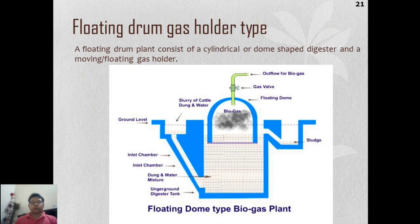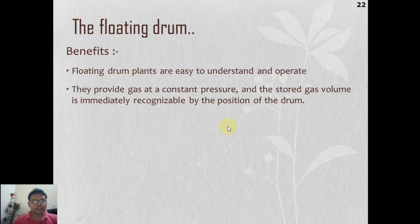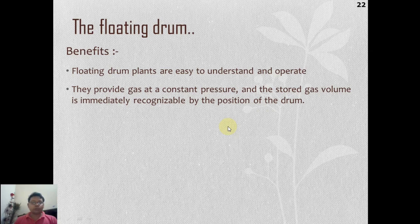The second type is the floating drum type of biogas plant — the drum floats over the main digester acting as a gas holder, making it a constant pressure biogas plant. This provides continuous supply of biogas at constant pressure. Benefits: it is easy to understand and operate, it is a constant pressure plant, and the stored gas volume is recognizable by the position of the floating drum, which indicates the quantity of biogas produced.